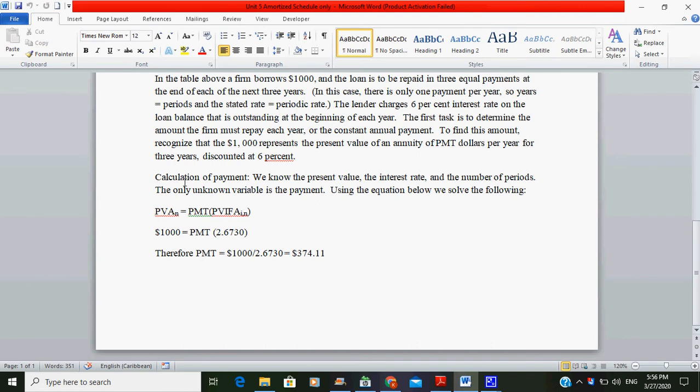This is how it is done. Calculation of payment. We know the present value, the interest rate, and the number of periods. The one unknown variable is payment, which is the PMT. Using the equation below, we solve for the following: present value of annuity equals PMT times present value interest factor of annuity.